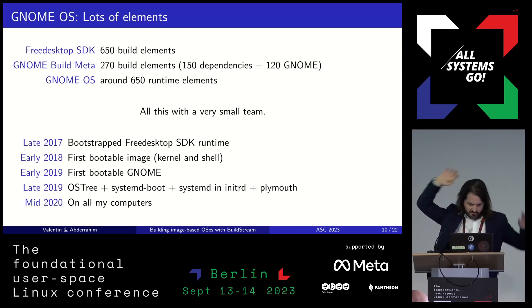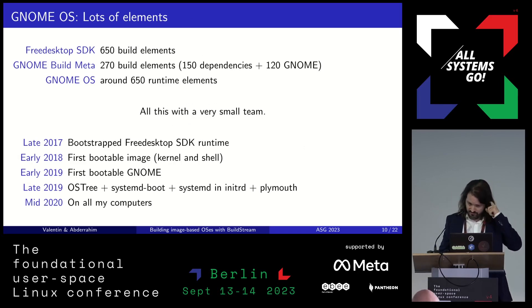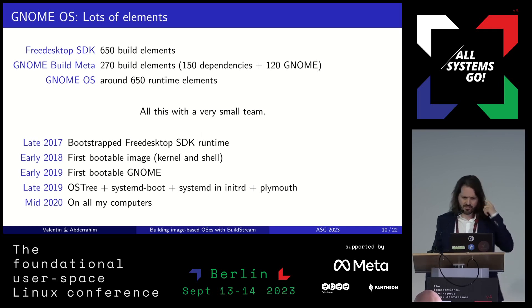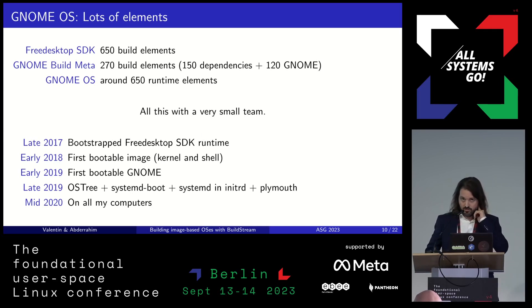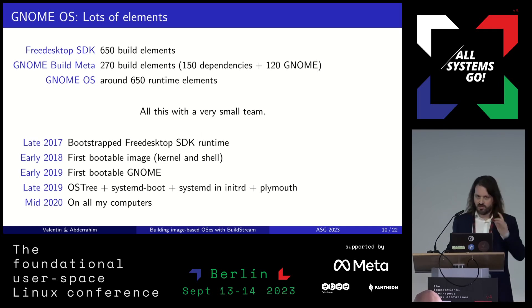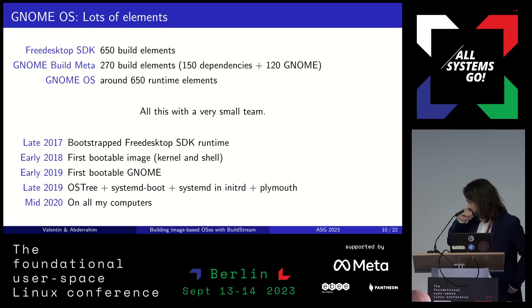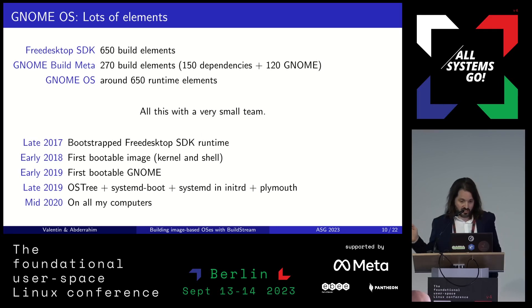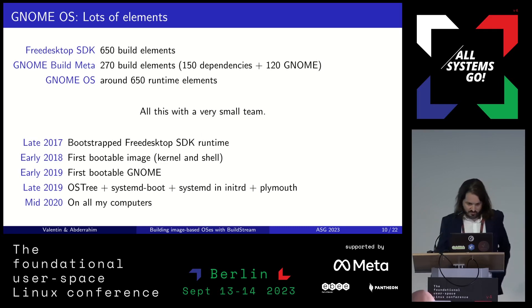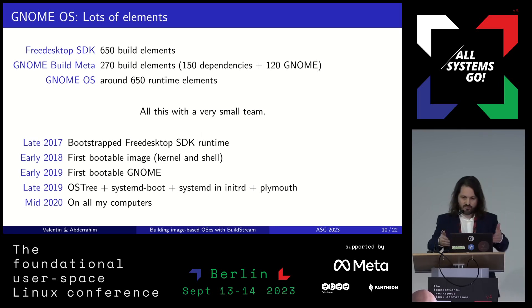It's kind of a big project. It's not a huge distribution, but we have around 650 build elements on FreeDeskTop SDK and 270 on GNOME Build Meta. In total, at runtime on GNOME OS, there are around 650 different elements. This is with a very small team. We started in 2017 by bootstrapping FreeDeskTop SDK and making the first runtime, and progressively, step by step, we ended up making a distribution that could run on computers. I run it even on this laptop here.